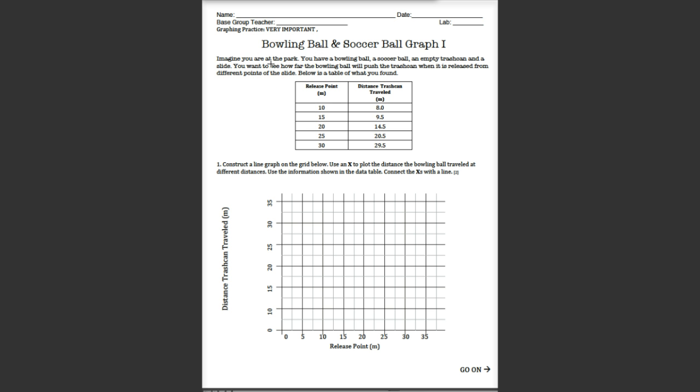Imagine you're at the park. You have a bowling ball, a soccer ball, and an empty trash can, and a slide. You want to see how far the bowling ball will push the trash can when it is released from different points of the slide. Below is a table of what you found. So basically, they're telling you here you have a slide, you have this little can, you're going to push a ball down.